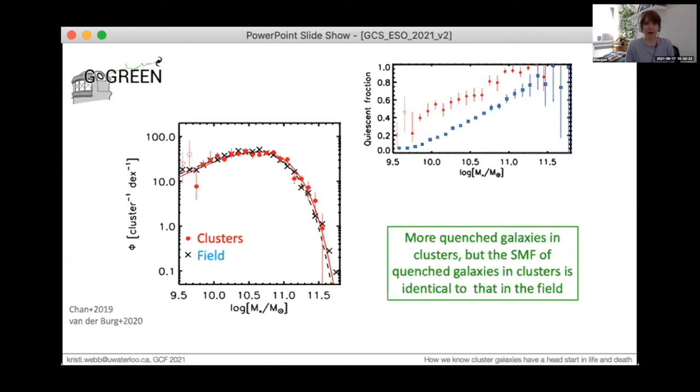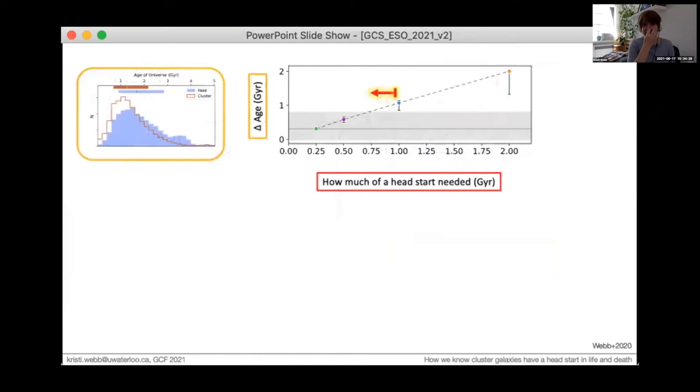So in my last slide, I just want to introduce the toy model that we use to try to bring these two observations together. Working with this head start scenario, we can ask how much of a head start is needed to explain the difference in ages between the cluster and field quenched populations. We do this with the toy model that's outlined in detail in my paper from last year. But suffice to say that the small age difference in ages requires only a small less than a gigayear head start, which is in fact just consistent with no head start at the 16th percentile.